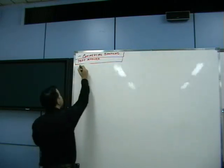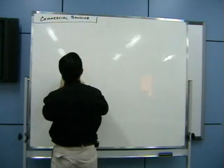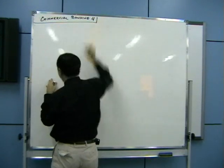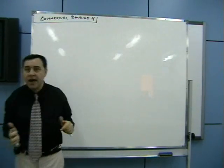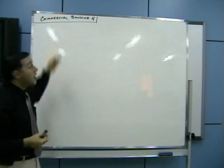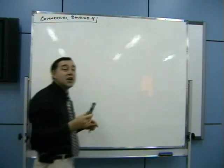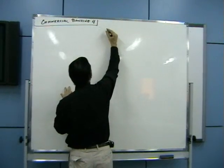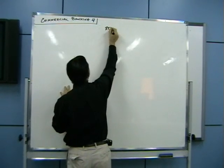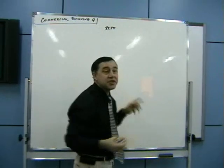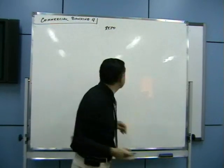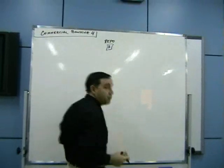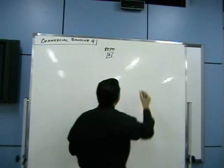We continue with Commercial Banking Four, which is the last part. The question was: what is a repo, and how does it really work? A repo is a repurchase agreement. You have Party A and Party B.